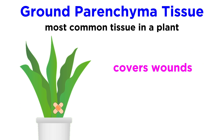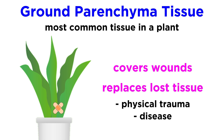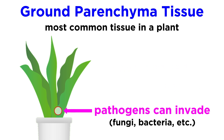Additionally, parenchyma tissue is so prevalent throughout a plant that it also takes on the role of growing to cover wounds and replace other tissues lost through physical trauma or disease. Wound closure is an important function for plants just like it is for us, because if a plant has an open wound, then all sorts of pathogens, like fungi and bacteria, could invade the plant and quickly kill it.